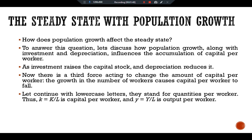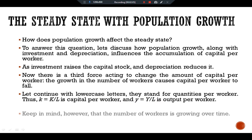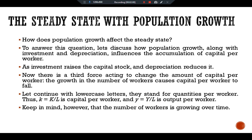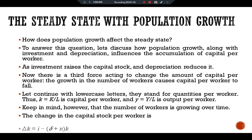Let's continue with lowercase letters — they stand for quantities per worker. Thus, lowercase k equals K over L, which is capital per worker, and lowercase y equals Y over L, which is output per worker. The number of workers is growing over time. The change in the capital stock per worker is written as: delta k equals i minus (delta plus n)k. This equation shows how investment, depreciation, and population growth influence the per-worker capital stock.